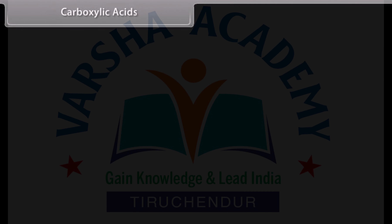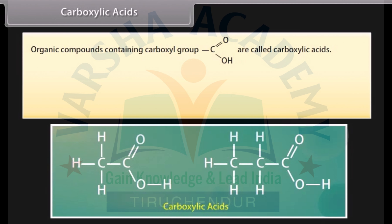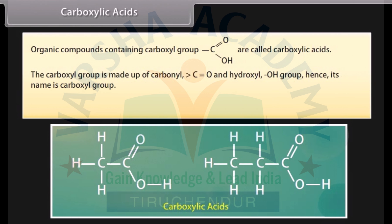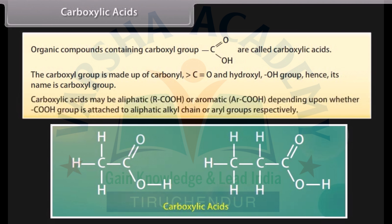Carboxylic acids: organic compounds containing a carboxylic group are called carboxylic acids. The carboxyl group is made up of a carbonyl and a hydroxyl group, hence its name carboxyl group. Carboxylic acids may be aliphatic or aromatic depending upon whether the carboxyl group is attached to an aliphatic alkyl chain or aryl groups respectively.